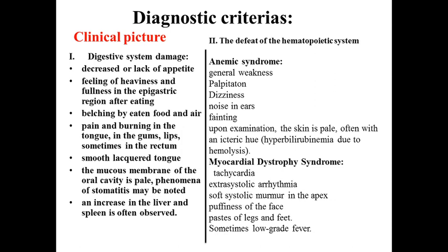That is why the clinical picture involves three systems. From the digestive system — because decreased cell division affects not only bone marrow cells but also GIT cells — we have digestive system damage, hematopoietic system damage, and neurological system damage. Digestive system damage appears as decreased or lack of appetite, feeling of heaviness and fullness in the epigastric region after eating, belching, pain and burning in the tongue, gums, and lips, and smooth atrophic tongue. The mucous membrane of the oral cavity is pale with phenomena of stomatitis. All these symptoms represent atrophic gastritis and atrophic GIT changes.